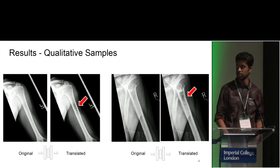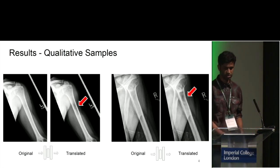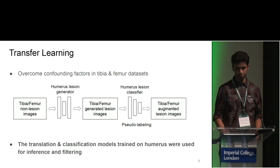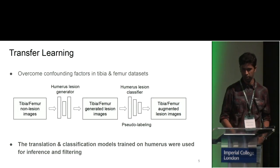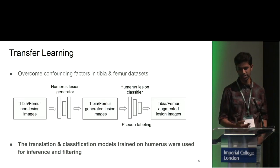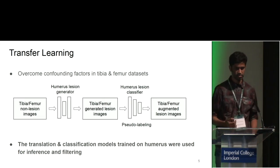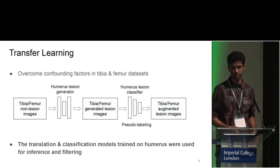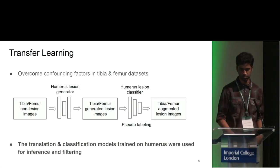Here are a couple of examples of synthesized bone lesions on the humerus. What we realized was that this works great for humerus, but training these image-to-image translation models on other body parts is not as feasible. There are multiple reasons for this, including the fact that there's hardly any training data for other body parts, a high degree of variance in the views, and presence of confounding factors such as implants and fixation hardware.